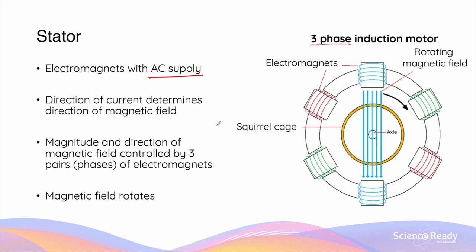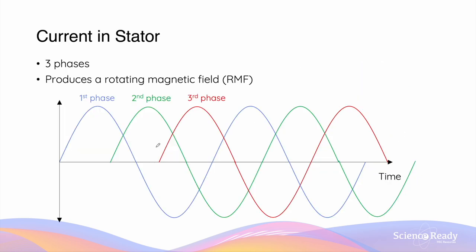Alternating current changes in magnitude and direction periodically, and it flows through these electromagnets at different times such that they produce a rotating magnetic field. The magnitude of the magnetic field is proportional to the magnitude of the current. When three pairs of electromagnets are connected to three different phases of AC, a rotating magnetic field — sometimes abbreviated as RMF — is produced.